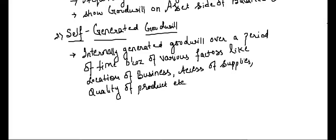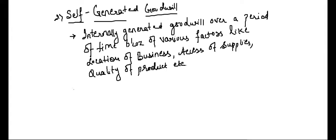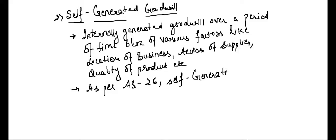It takes years to build a reputation. No business will flourish in the very first year — it takes time to settle down, to reach customers, to make sure you are delivering the right quality of product at the right price so that customers stick to you for a long period of time. One very important point regarding self-generated goodwill is that as per Accounting Standard 26, this self-generated goodwill will not be shown in the balance sheet.